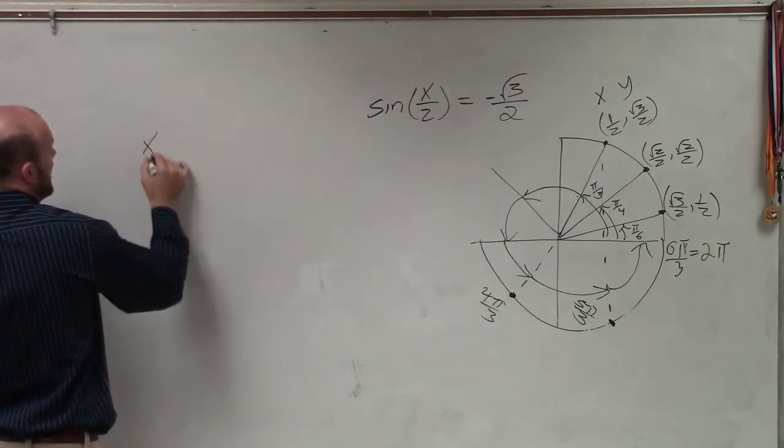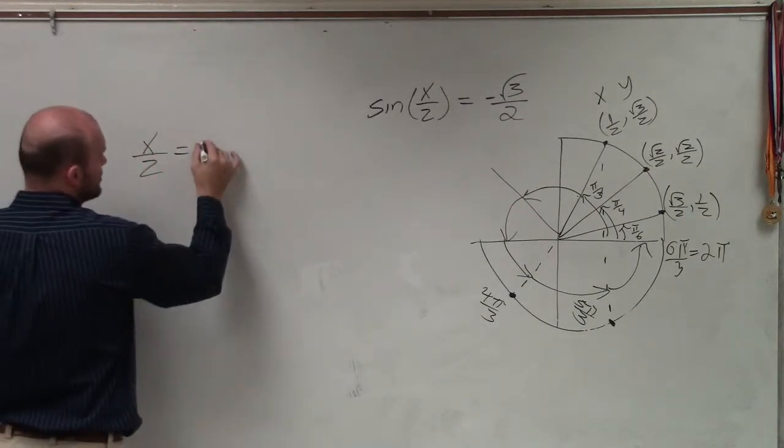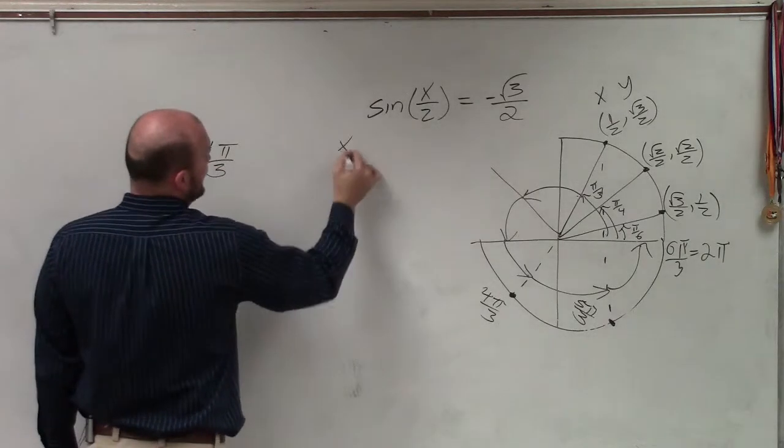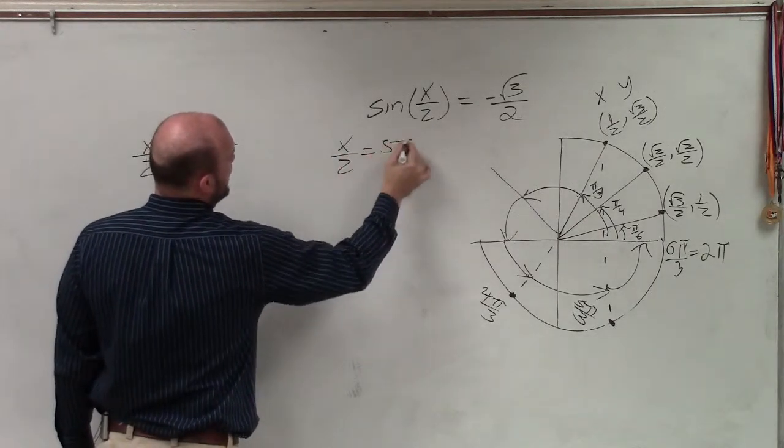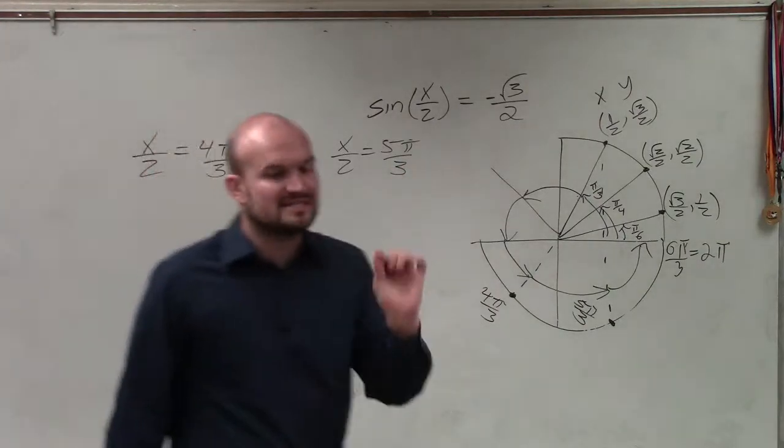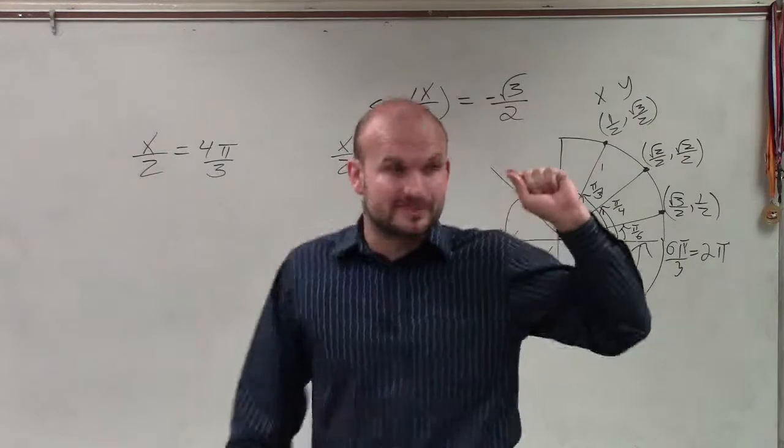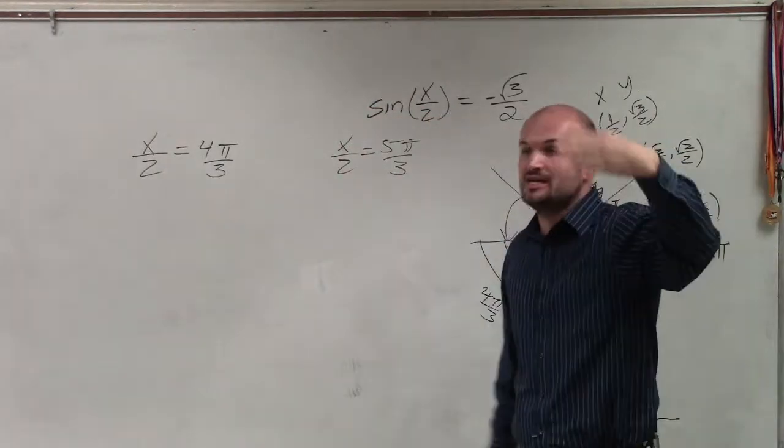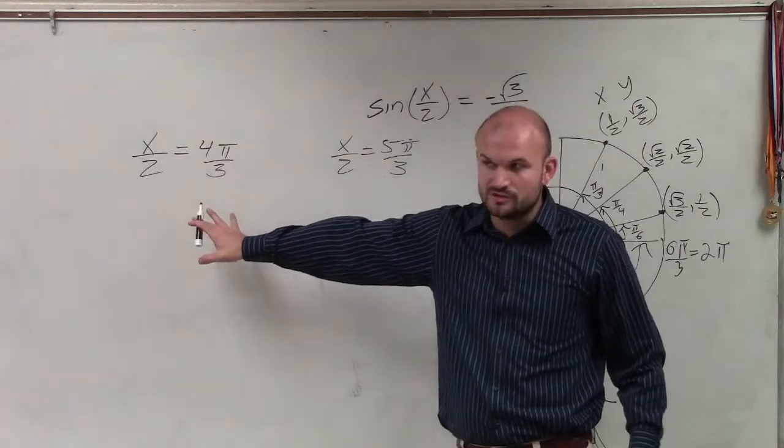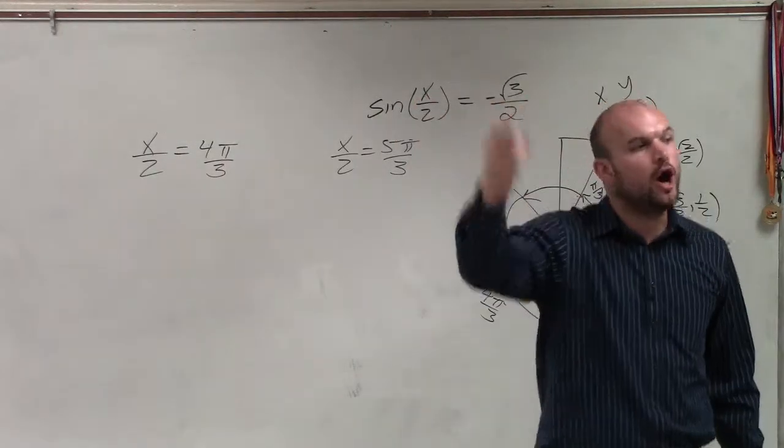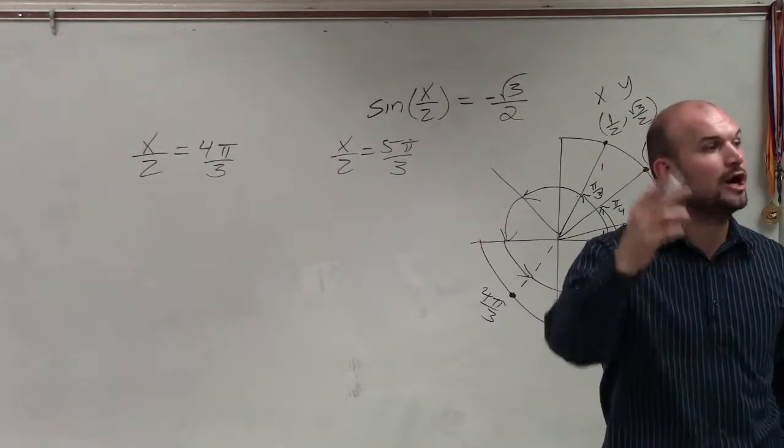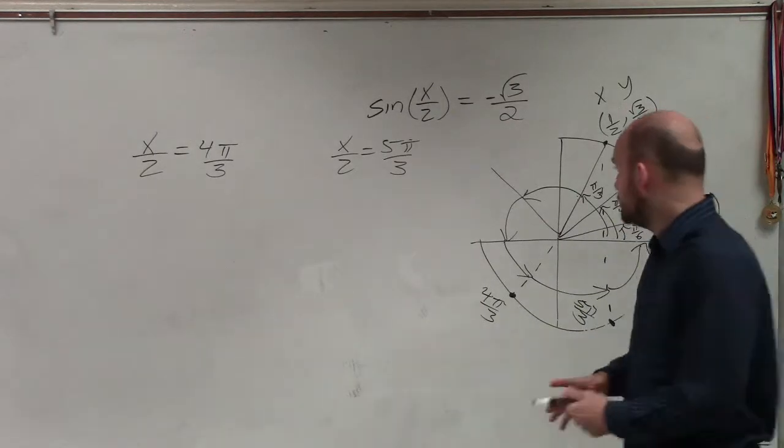So my answers now are x divided by 2 equals 4π over 3, and x divided by 2 equals 5π over 3. Now, there is a very important distinction that they asked. They said find all of the solutions, right? If they just said find the solutions between 0 and 2π, we can work off these two solutions. But it said find all of the solutions. That means I need to determine all the coterminal angles.